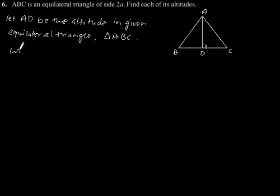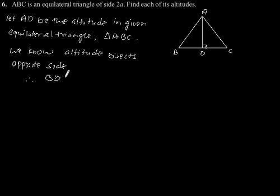We know that altitude bisects the opposite side. Therefore, BD is equal to DC is equal to a.